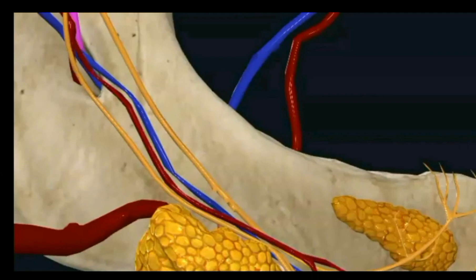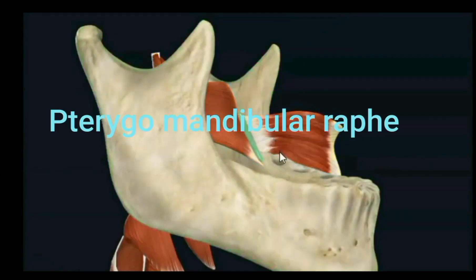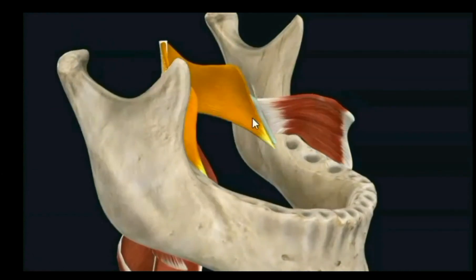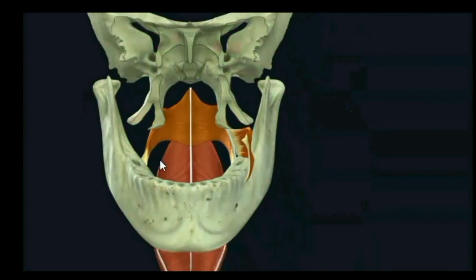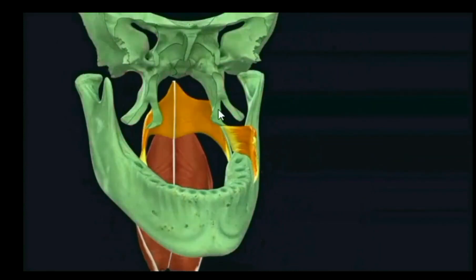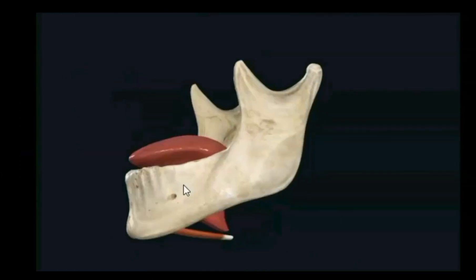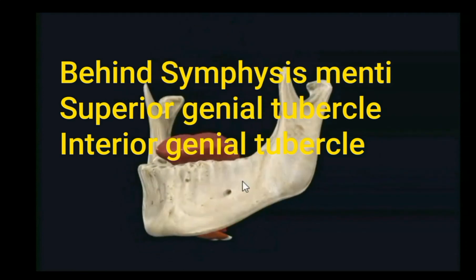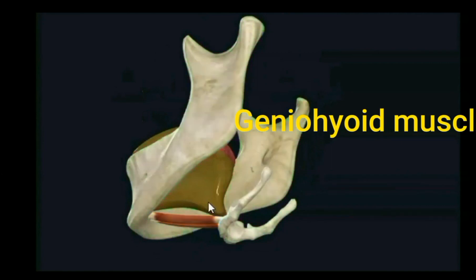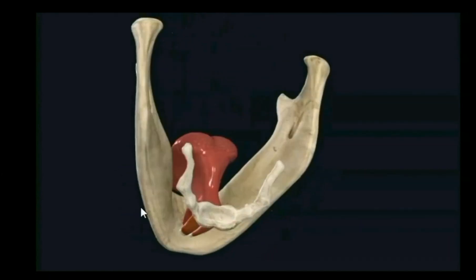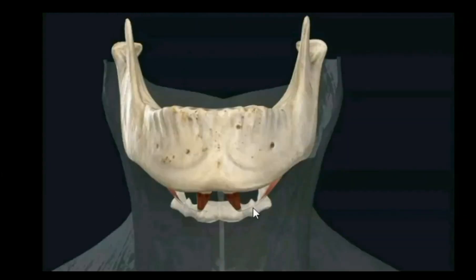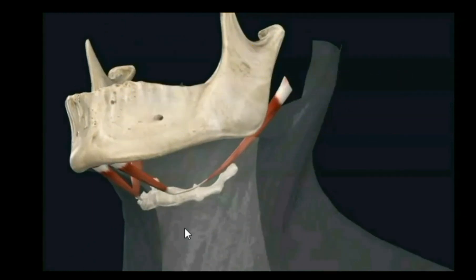Just behind the third molar tooth you will see the pterygomandibular raphae, which extends from the lower end of the medial pterygoid plate — that is the pterygoid hamulus — giving origin to buccinator in front and the superior constrictor behind. On the inner surface behind the symphysis menti, you will see two tubercles: the superior genial tubercle for genioglossus and the inferior genial tubercle for geniohyoid. Genioglossus forms the root of the tongue; geniohyoid extends from the inferior genial tubercle to the hyoid bone.